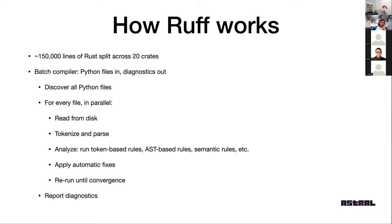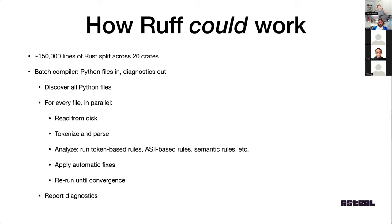One interesting thing I've been thinking about a lot lately is how Ruff could work differently. Since I started working on Ruff, I didn't really know anything about building tooling like this. Since then, I've looked at a lot of other projects. The two I tend to draw the most inspiration from regarding high-level design are Rust Analyzer — the Rust language server used typically in VS Code for auto-completion and other things — and a project called Rome, which is a unified toolchain for JavaScript and TypeScript, also written in Rust.